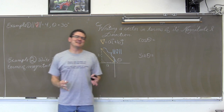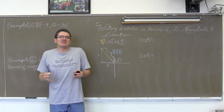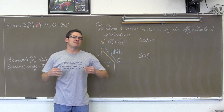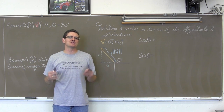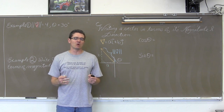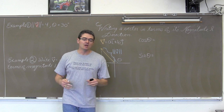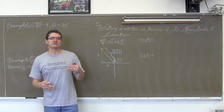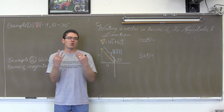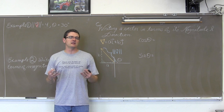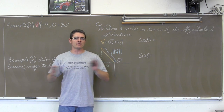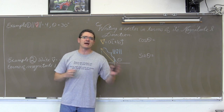Vectors are nice when you want to name them in terms of magnitude and direction, but those numbers are not friendly to work with. So we want to talk about vectors in terms of direction and strength, but we want to work with them mainly in terms of the x and y components. We want to make sure we can convert back and forth.